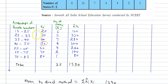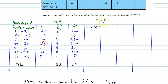We find the deviation di of each Xi from the assumed mean, where di = Xi − a. With a = 50: for Xi = 20, d = −30; for 30, d = −20; for 40, d = −10; for 50, d = 0; for 60, d = 10.